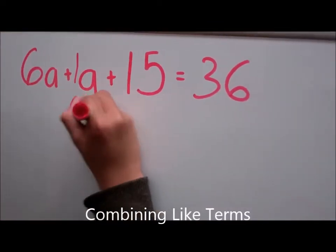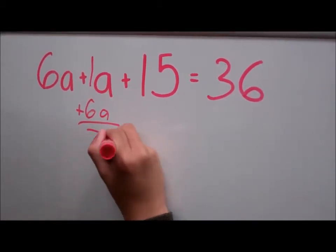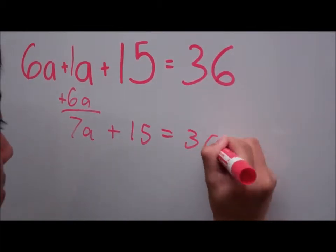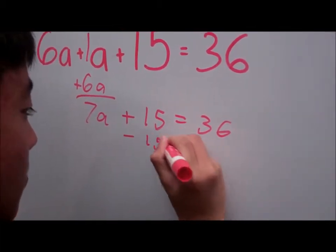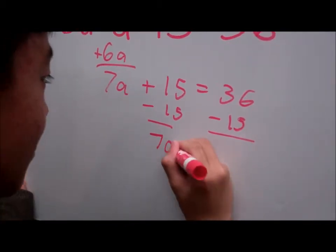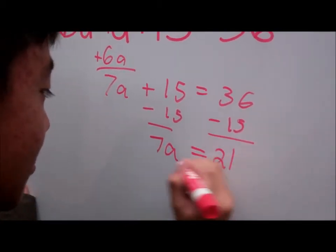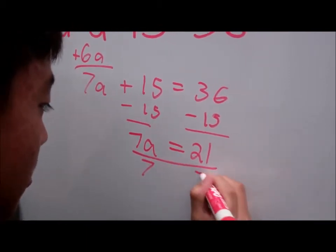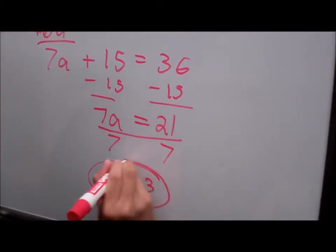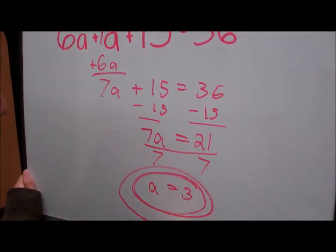So, we add 6a and 1a and that equals 7a. Bring down 15 and 36. Now we subtract 15 from both sides of the equation. 7a equals 21. Now we divide each side by 7 and a equals 3. Good job Dennis.